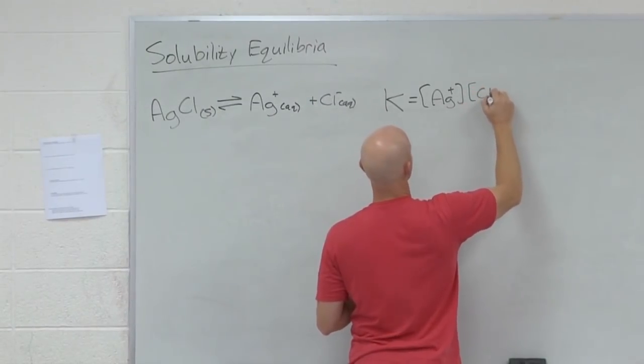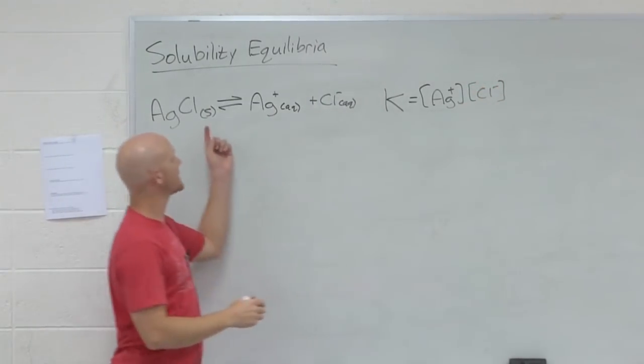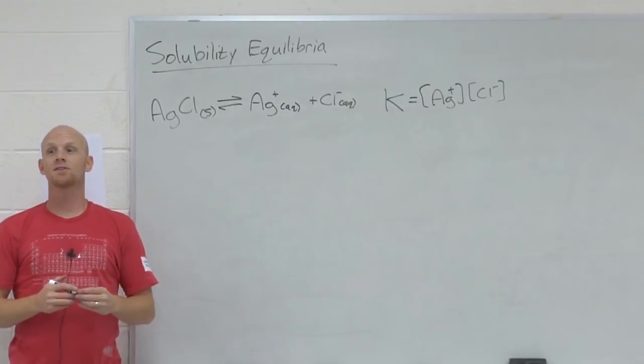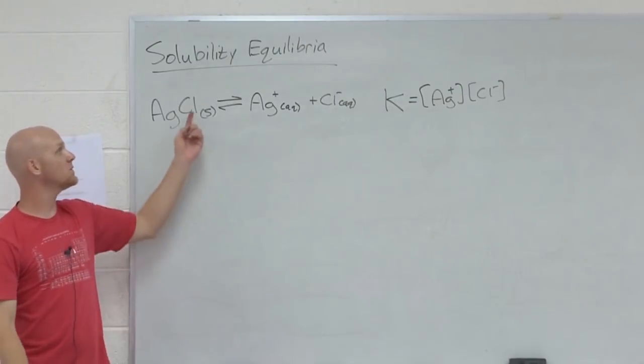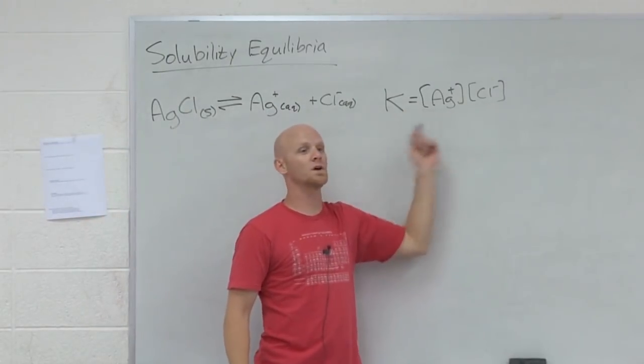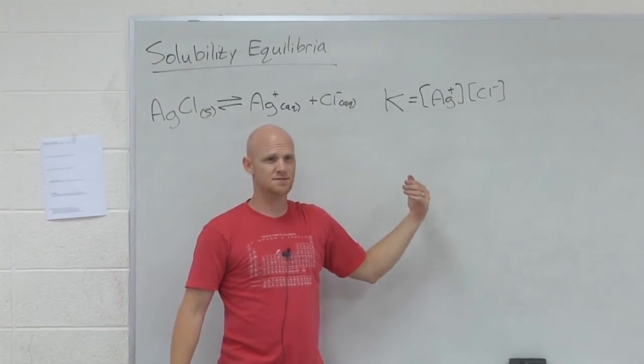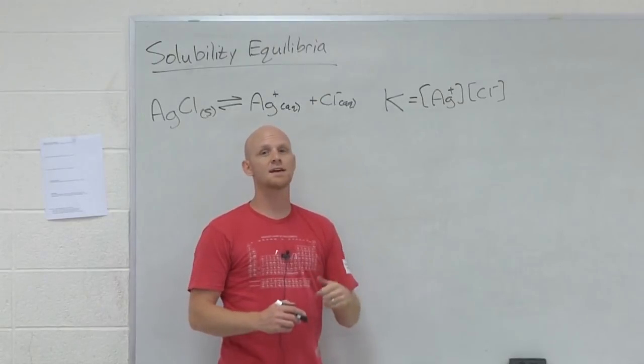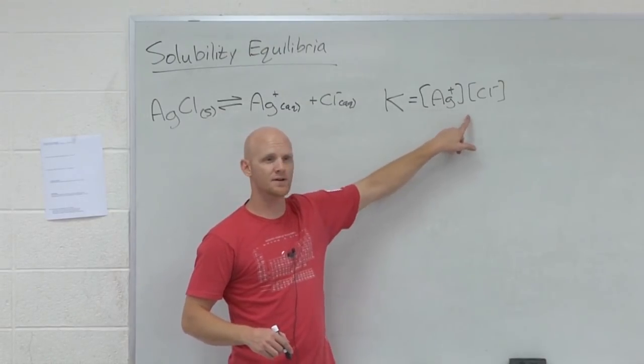And that's it. Why? Because the reactant is a solid. In a solubility equilibrium, the reactant will always be a solid. And solids don't show up. So essentially we're dividing by one, right? And so in this case, since your reactant is always a solid, you never have a denominator here.